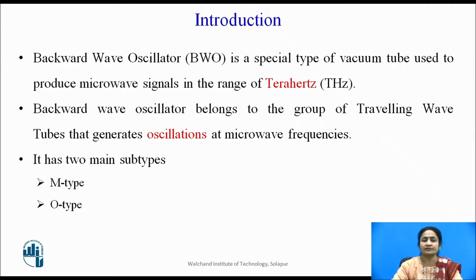The basic difference between the M-type and O-type is how the magnetic field is placed inside the tube. In the M-type, the electric field and the magnetic field are perpendicular to each other, while in the O-type, they are parallel to each other.